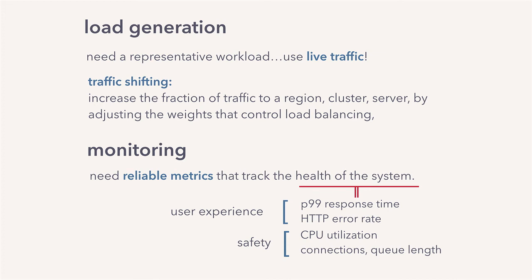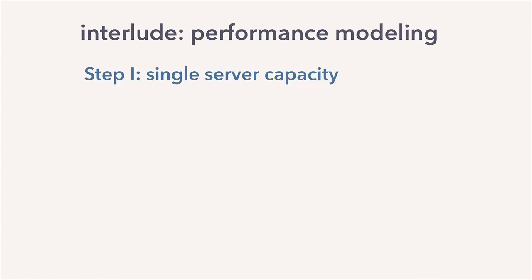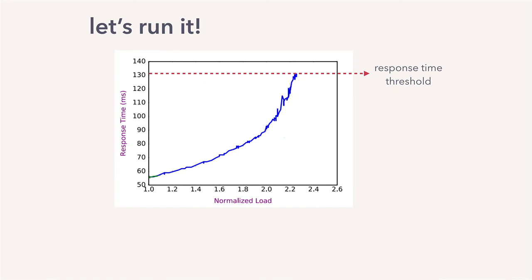Let's say we run Kraken against a cluster and get a graph that looks like this. Is this graph useful? Sure — it tells us the capacity, the max throughput the system can support; it's simply the throughput right below the response time threshold we've set. But is that number good? Is there a bottleneck? Well, we have no means to evaluate the system — we don't have any expectations or targets for how we expect the system to behave. And unlike in your relationship, no expectations in performance analysis is never a good thing.